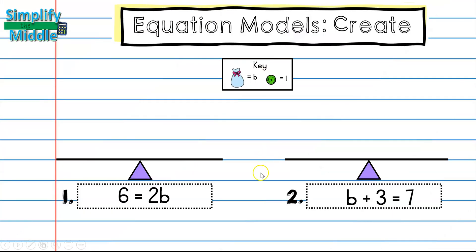How about we create our own? Here they've given us a key. And we can see that this bag is going to represent the variable b. And this candy is going to represent the constant 1. So on this first scale, I have 6 constants. So I'm just going to go ahead and draw 6 candies on this side of the scale. And that's going to be equal to 2b, which b is our bags. So I should have 2 bags on the right side of my scale. And this matches.